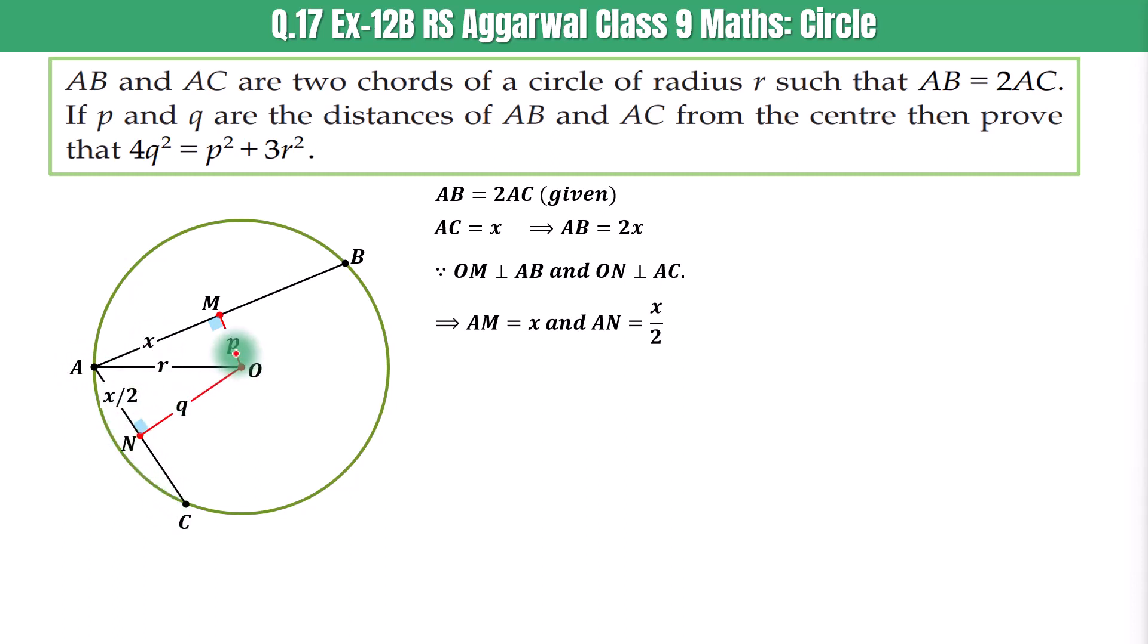In right triangle OMA, X squared is equal to R squared minus P squared. This is our equation 1.